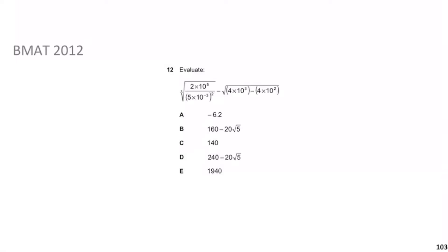Let's deal with the simpler term first: the square root of (4 × 10³ − 4 × 10²), which is √(4000 − 400) = √3600. Since 60² = 3600, this equals 60.